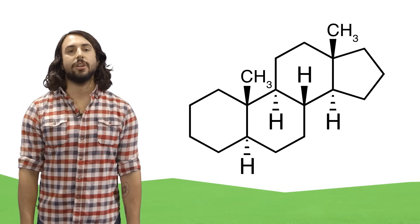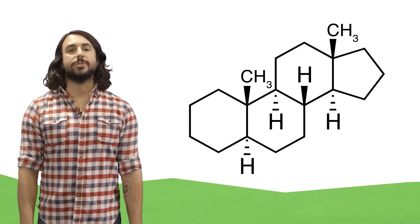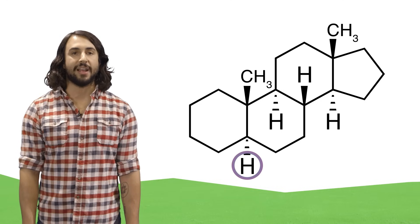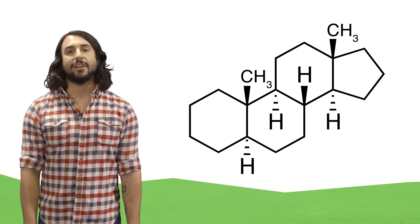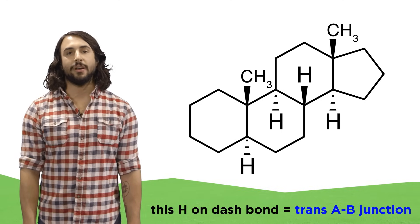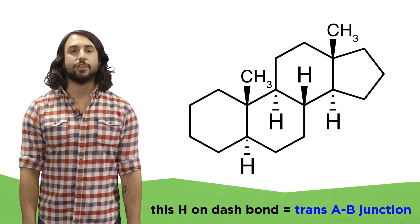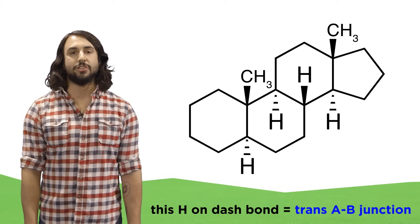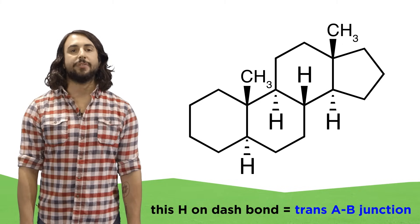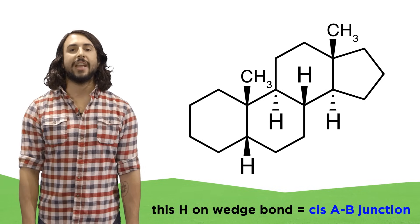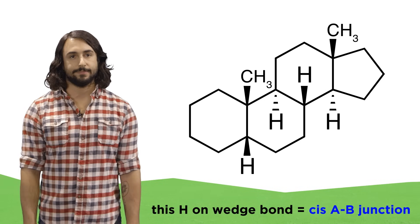The orientation of the A ring will depend on the hydrogen at carbon 5. If that hydrogen is alpha, or on the dash bond, you get the trans AB junction. If the hydrogen is beta, or on the wedge bond, you get the cis AB junction.